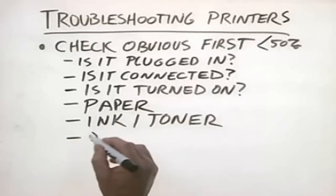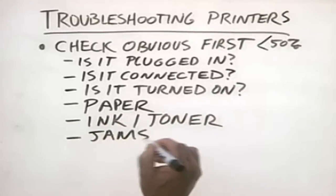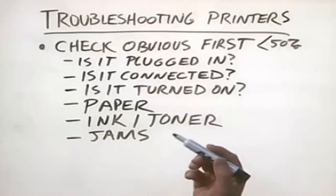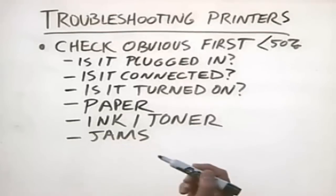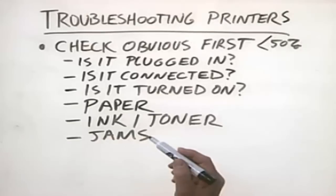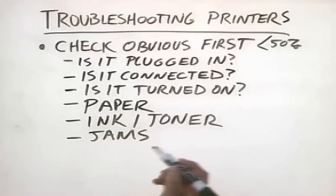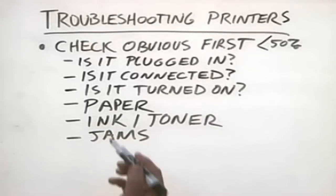Another thing to check for is jams. Is there a piece of paper jammed inside the printer? Usually, depending on the type of printer you're using, there will probably be some kind of display on the front of the printer that indicates a jam — it might be a blinking light, or a little LCD panel that says 'paper jam.' Check for a jam before you start trying to troubleshoot other problems.